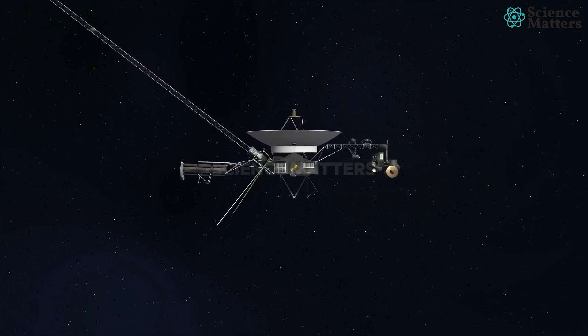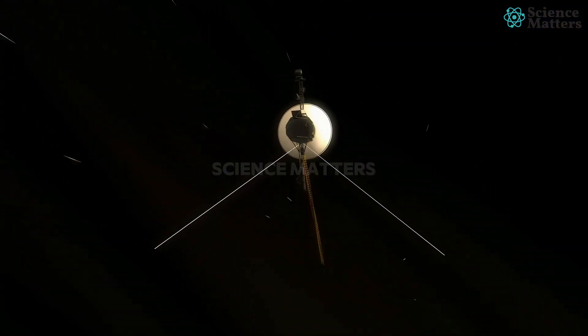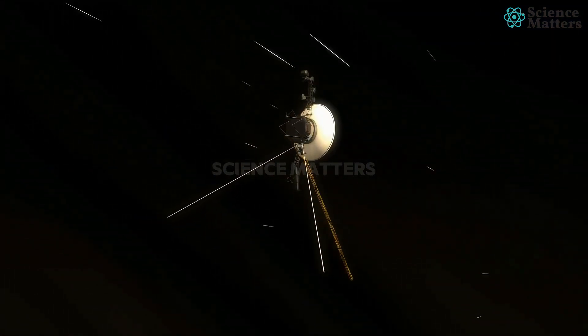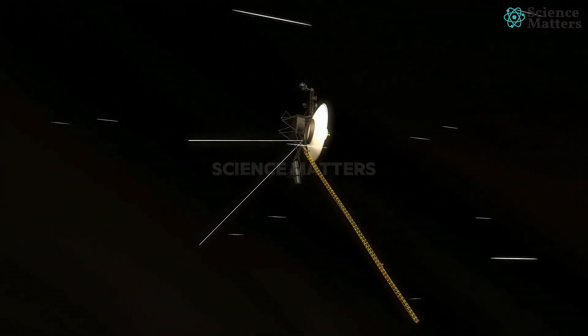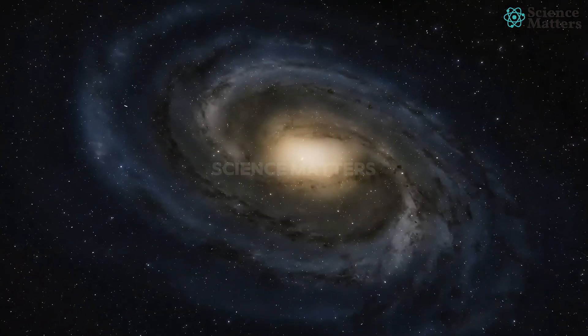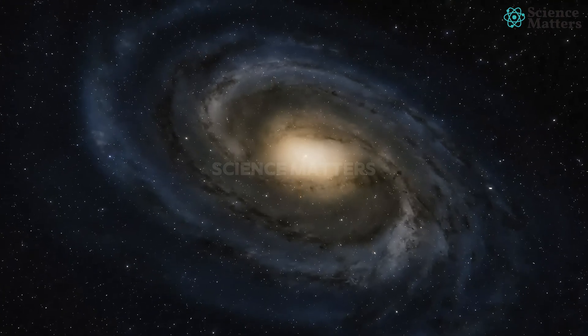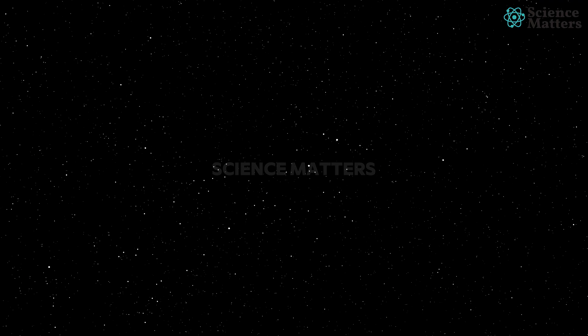Therefore, it's possible that Voyager 1's structure could remain recognizable for hundreds of millions to a few billion years, barring any catastrophic collisions with large objects. By this time, it will have traveled around a quintillion miles, which is only about 1.7% of the Milky Way's diameter, but it would have seen numerous stars.